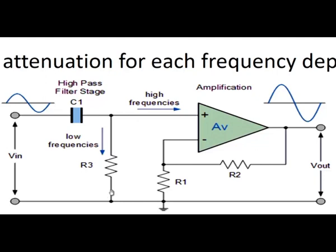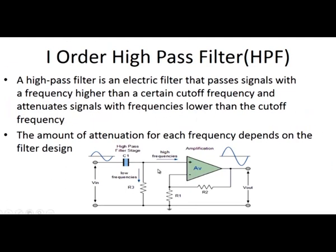In this circuit, the capacitor is in series and the resistor is in parallel. Frequency is inversely proportional to the capacitive reactance: F is inversely proportional to Xc. If F is very high, Xc will be reduced, and the capacitor in the circuit will be a short circuit. So when a high frequency signal is given, the capacitor acts as a short circuit for high frequencies.